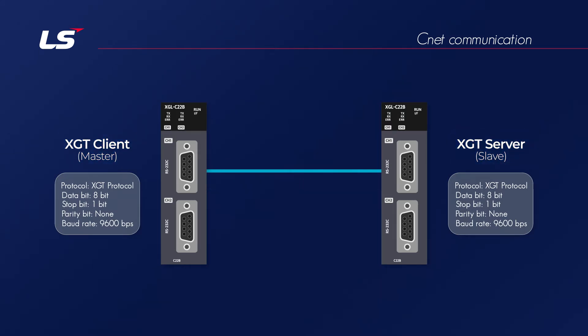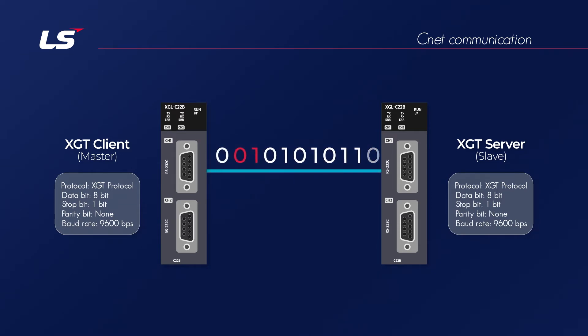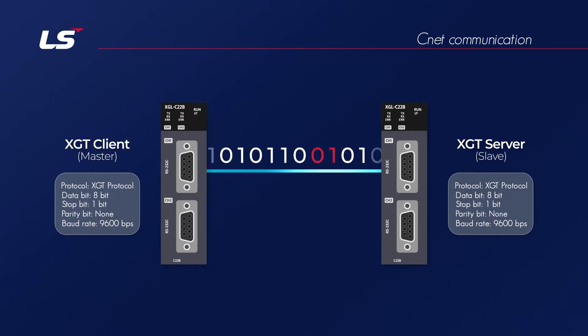When data is transmitted using CNET, data is transmitted one bit at a time along the signal line, so the actual data transmission proceeds as follows.